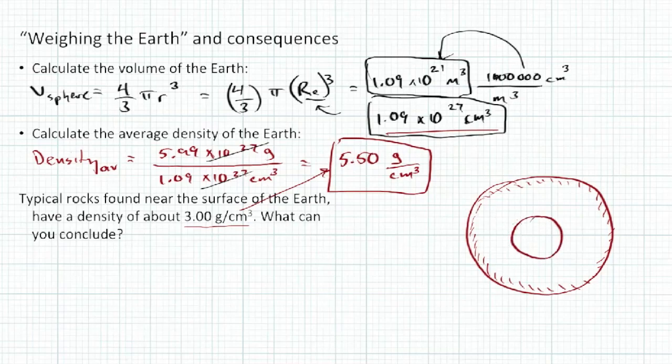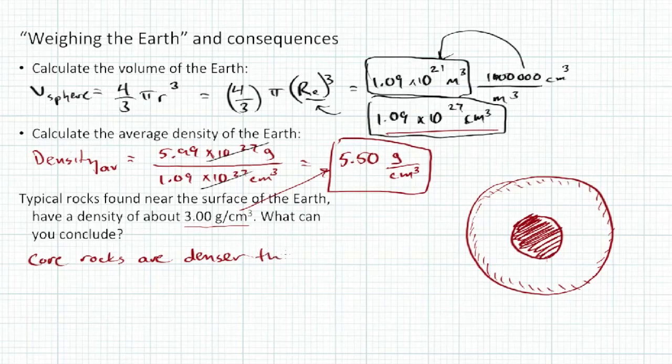The rocks must be significantly more dense than at the surface. So core rocks, they're actually not just more dense than at the surface, but they must be more dense than the average. They've got to be denser than the average density. Because it has to balance out the fact that the surface rocks are much less dense.